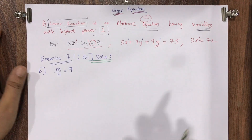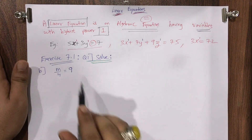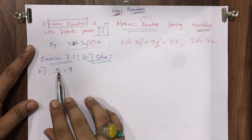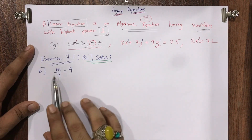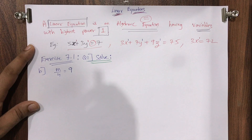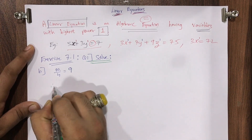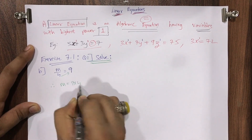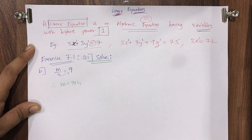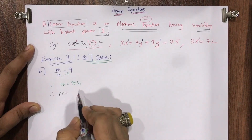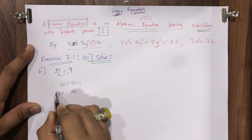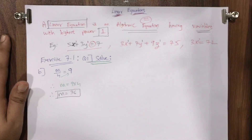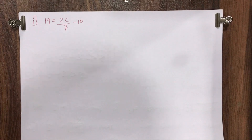The variable is m — it's not necessary that the variable will always be x, y, or z. Solve means we need to find the value of m. This 4 will be multiplied with 9, so m = 9 × 4. Therefore m = 36. That is the answer.